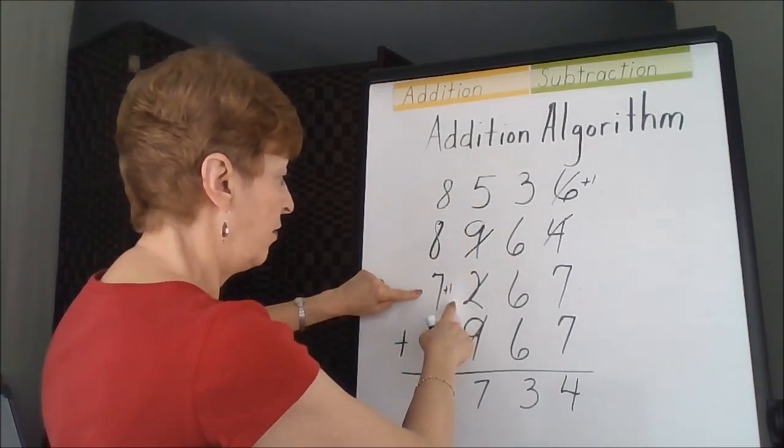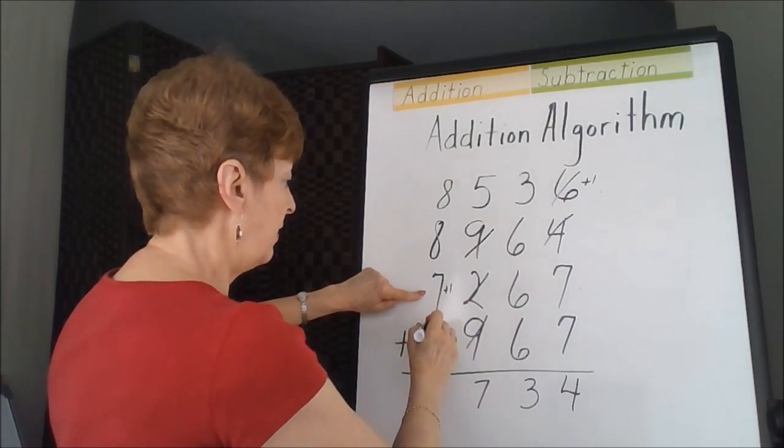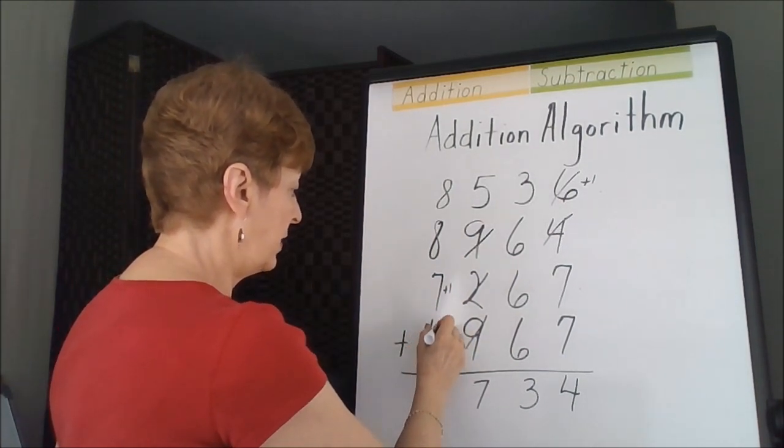Or we could say 3 times 8 is 24, 25, 26, 27, 28, 29.